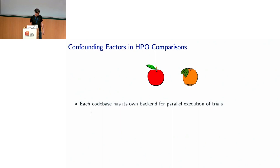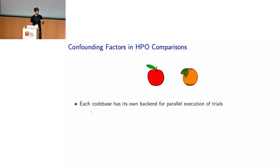However we compare hyperparameter optimization methods — whether with real benchmarks or surrogate benchmarks — we face a number of confounding factors. The first factor is that if you compare methods implemented in different code bases, these code bases often run their own different execution backends to run trials in parallel. If you compare method A and B from different code bases, it's very hard to disentangle whether a difference comes from the methods making better decisions or simply from the execution backend being implemented differently.